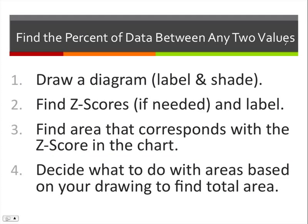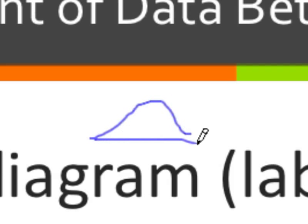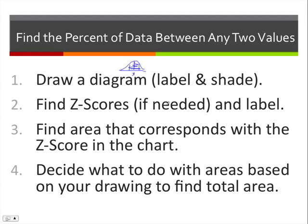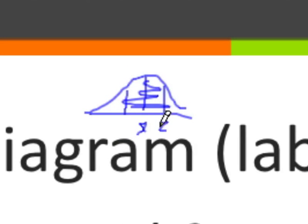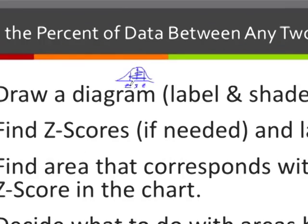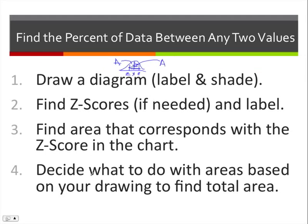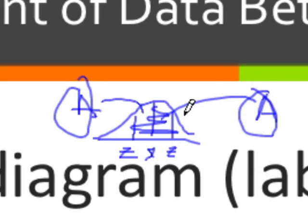To find the percent of data between any two values, follow these steps. First, draw a diagram — sketch your bell curve and label the mean, then figure out where to shade. Second, find the z-scores if needed and label them. Third, find the area corresponding to each z-score in the chart. Fourth, decide what to do with the areas based on your drawing — sometimes you add them, sometimes subtract, sometimes add 0.5.